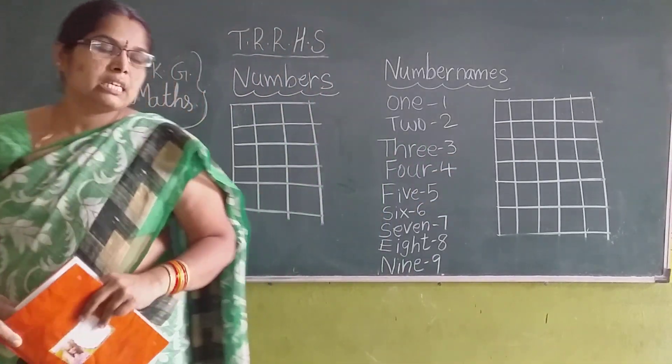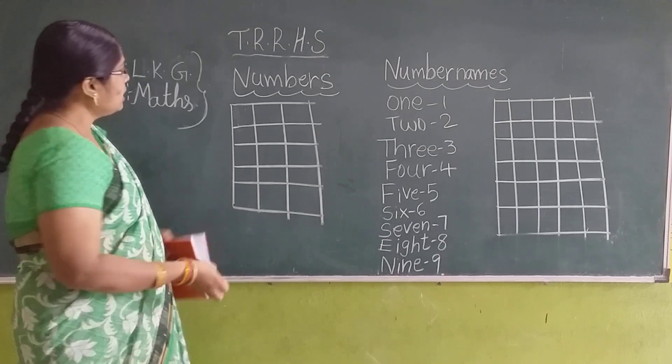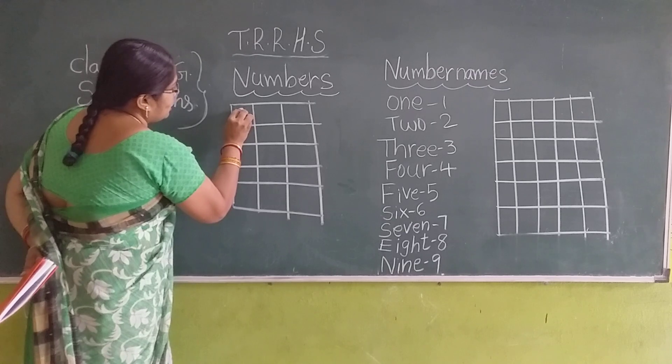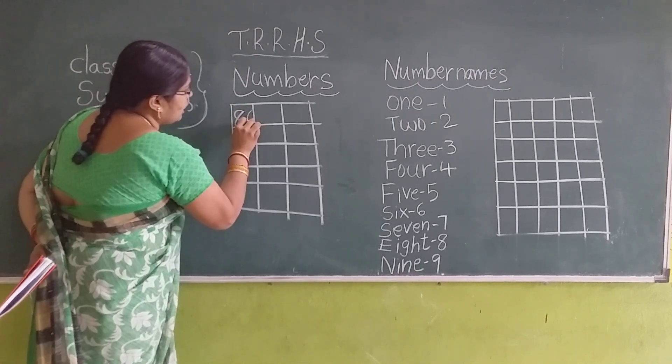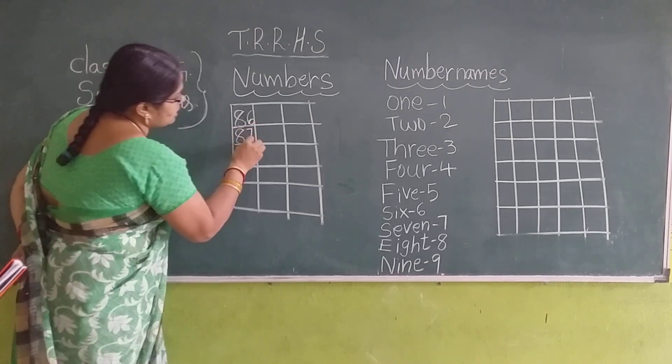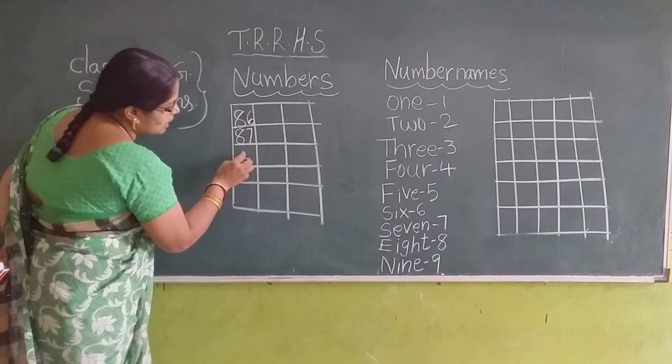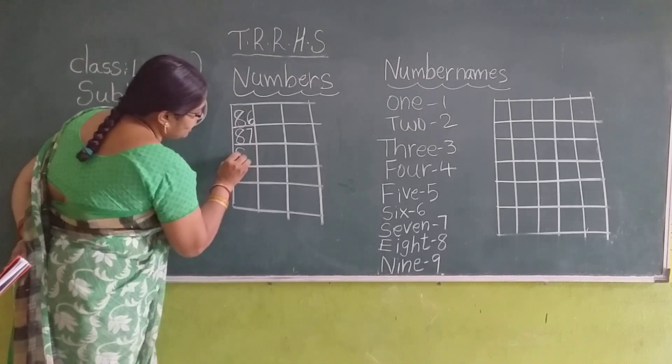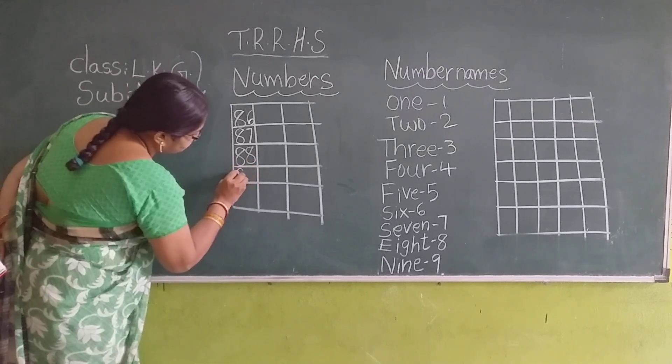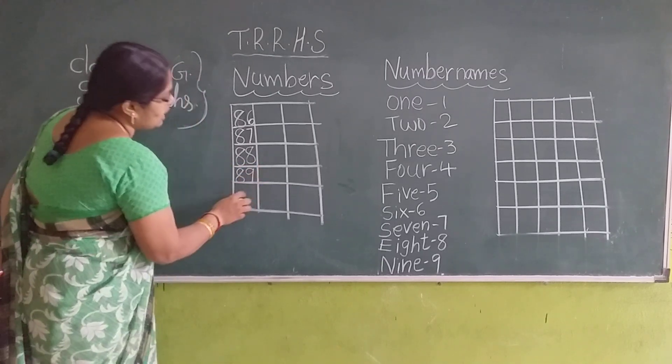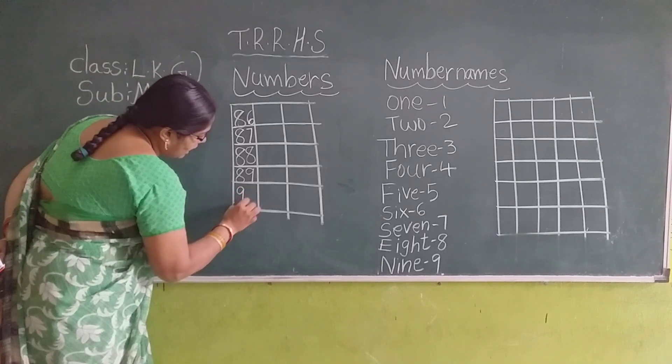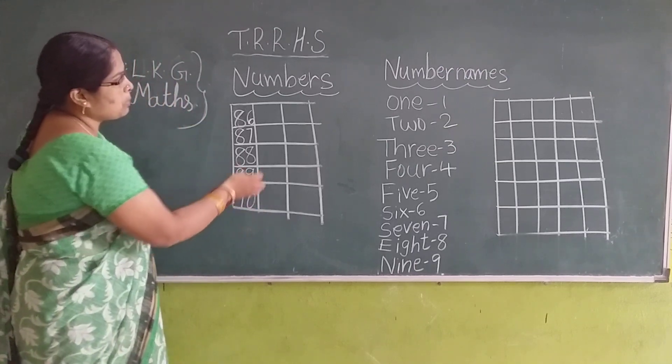Okay children, look at the board. Already we completed numbers 1 to 85. Today we are going to learn numbers 86 to 90. 8, 6, 86. After, 8, 7, 87. After which number comes? Yes, 8, 8, 88. After, 8, 9, 89. After, 9, 0, 90. One more time repeat it.